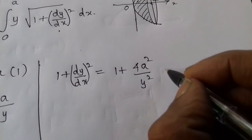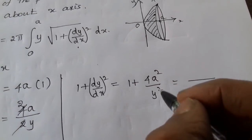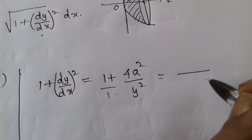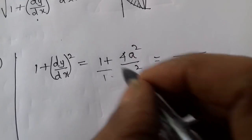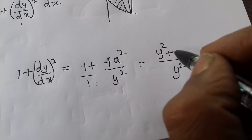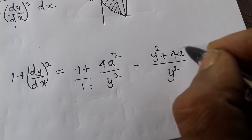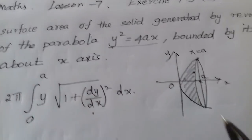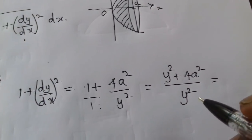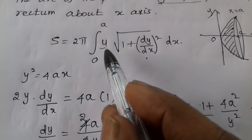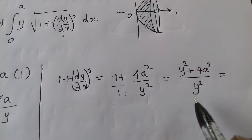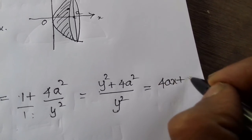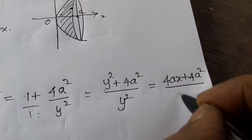Computing 1 + (dy/dx)²: taking common denominator y², we get (y² + 4a²)/y². Now substituting y² = 4ax from the parabola equation, we get (4ax + 4a²)/y². This simplifies to 4a(x + a)/y².